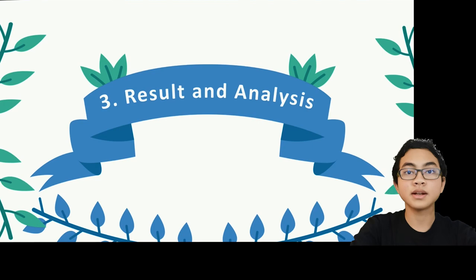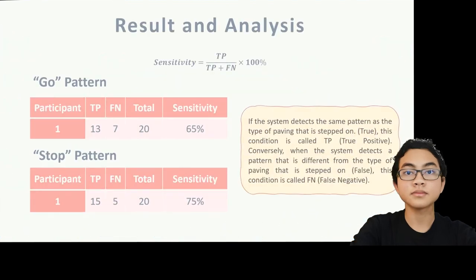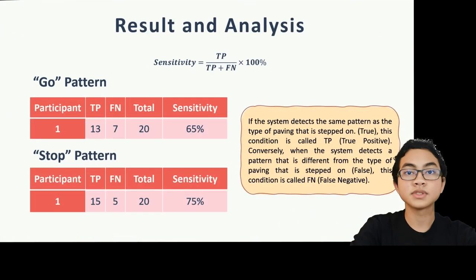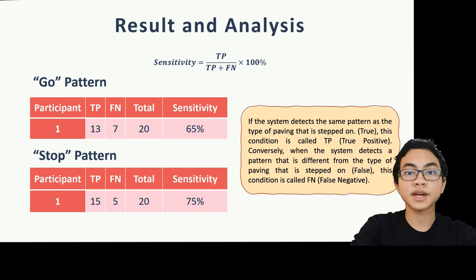Result and Analysis. Testing is required to measure the sensitivity of the tool. If the system detects the same pattern as the type of paving that is stepped on, this condition is called true positive. Otherwise, when the system detects a pattern different from the type of paving stepped on, this condition is called false negative.